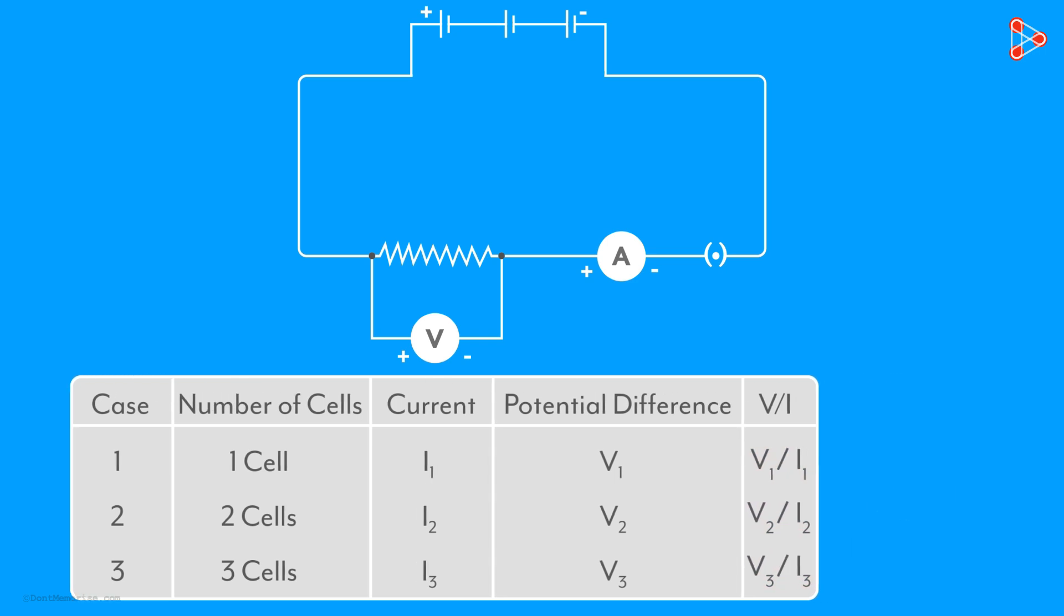This tells us that the potential difference V across the ends of a wire is directly proportional to the current flowing through it.